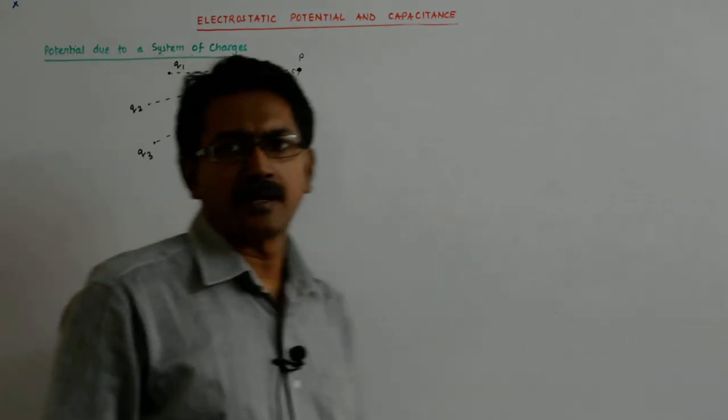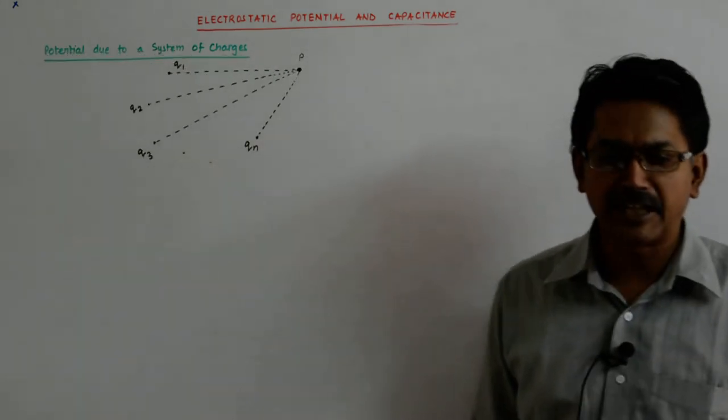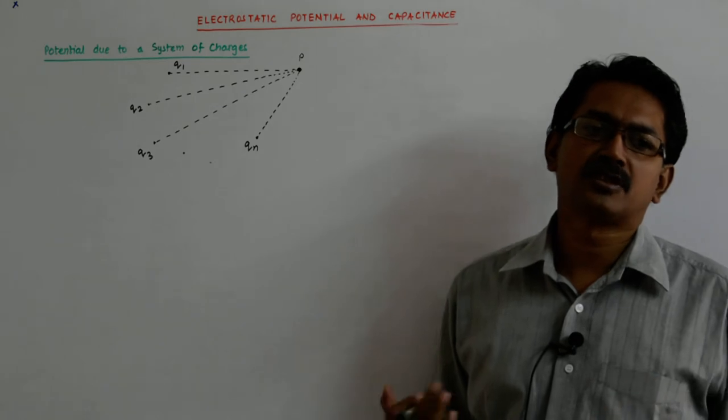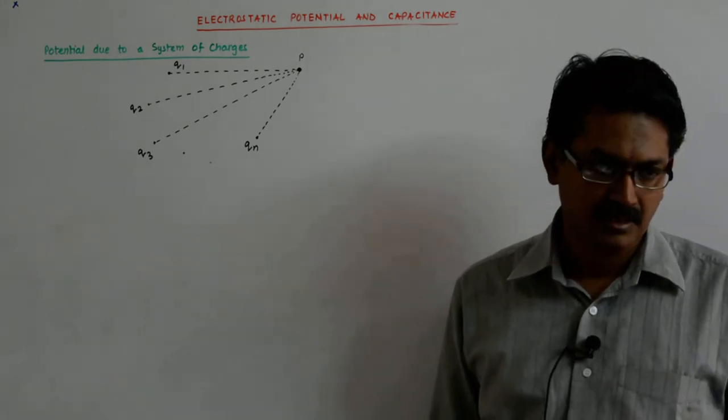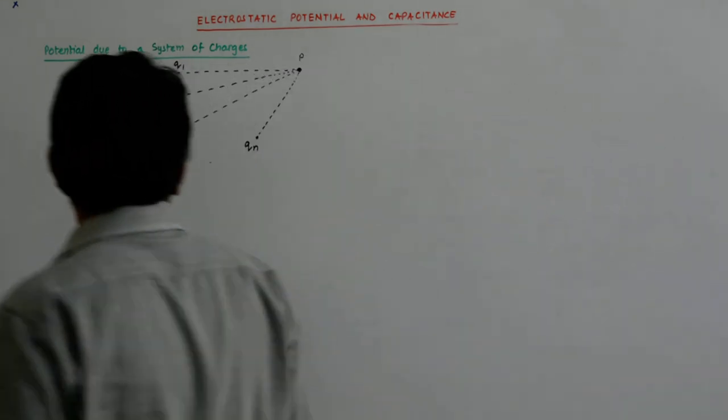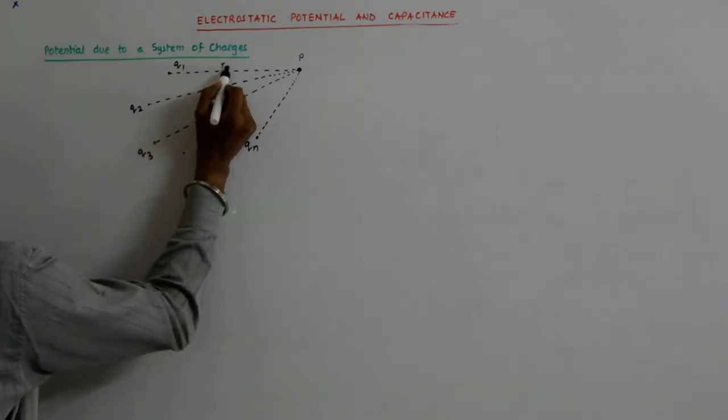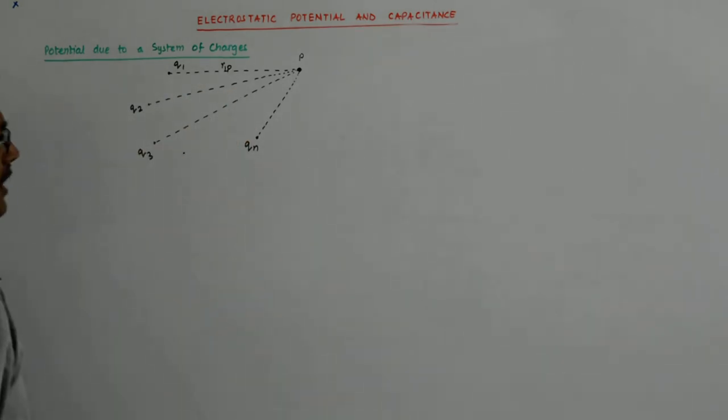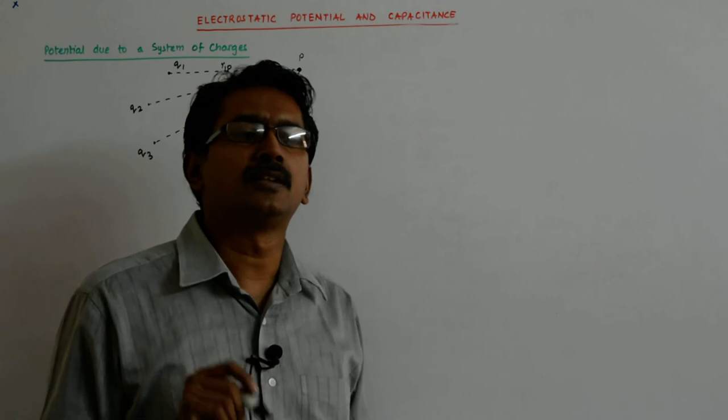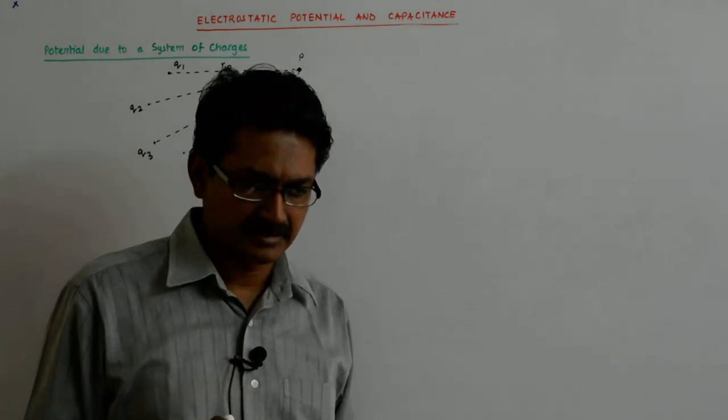Now you know the best part about finding out the potential is you have to just do the scalar sum, the algebraic sum. So it will be what? R1P - we are only concerned about the distance, right?